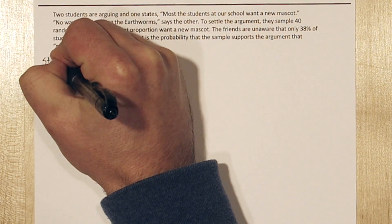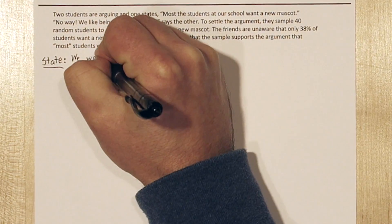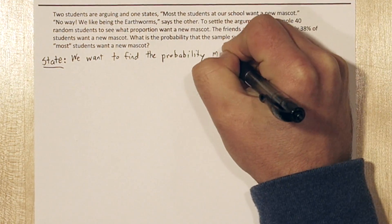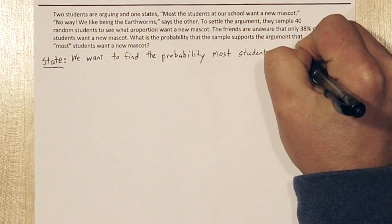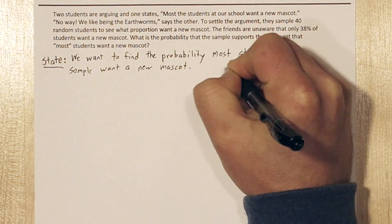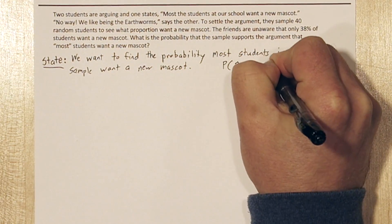Let's use the four-step process to solve this one. So let's start with state. We want to find the probability that most students in the sample want a new mascot. That is, we want to find the probability that p-hat, our sample proportion, is greater than 0.5.